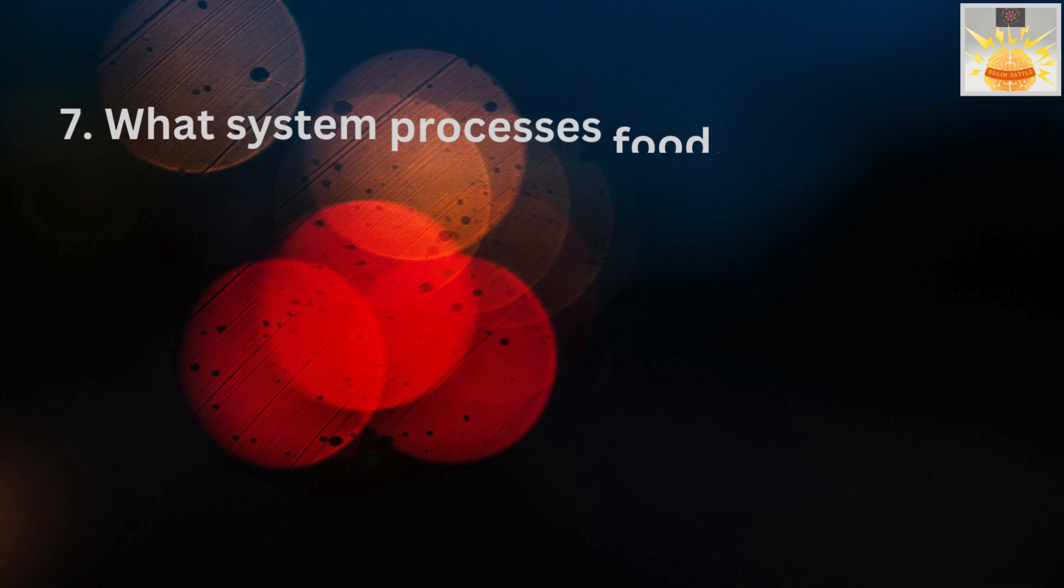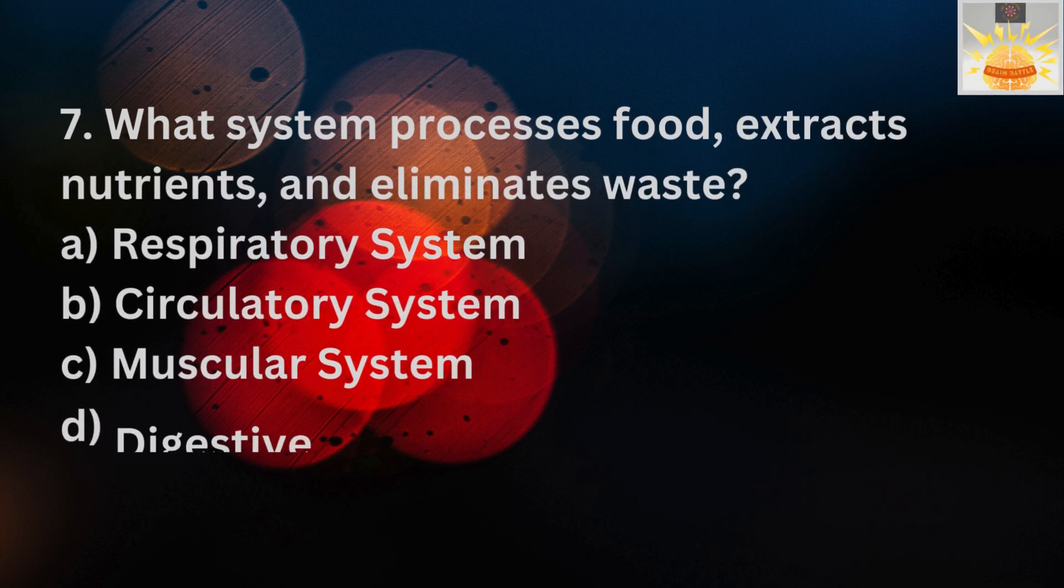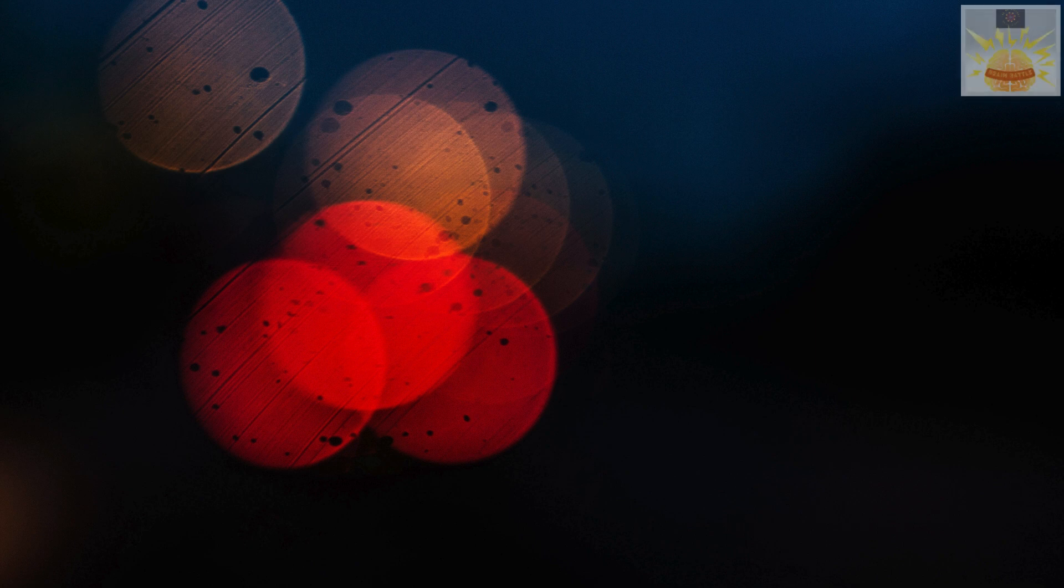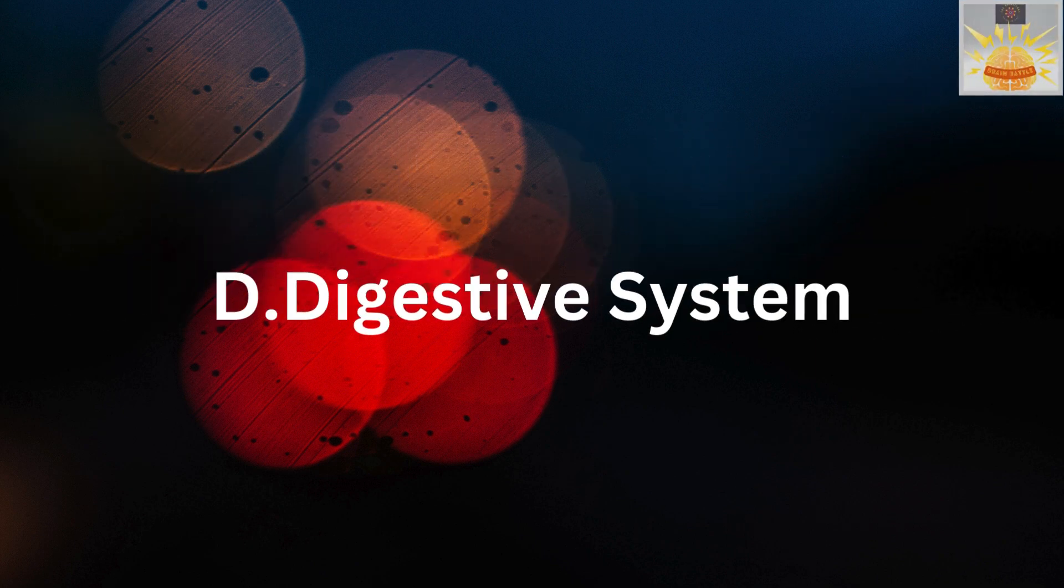What system processes food, extracts nutrients, and eliminates waste? A. Respiratory system. B. Circulatory system. C. Muscular system. D. Digestive system. Okay, so the answer is D. Digestive system.